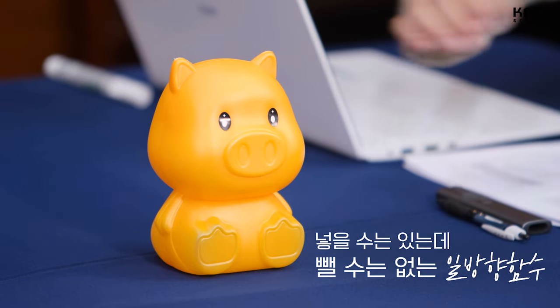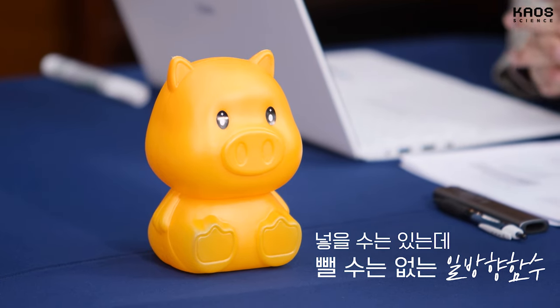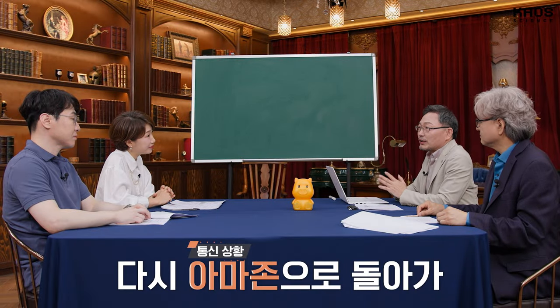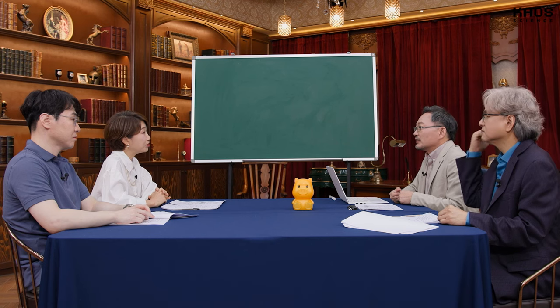수학적으로는 이런 생각을 합니다. 넣을 수는 있는데 뺄 수는 없다. 일방향 함수. 우리가 일방향 금고라고 부르죠. 넣을 수는 있는데 뺄 때는 비밀키가 필요하다. 그러면 저는 아마존에서 물건을 구매하려고 할 거예요. 일방향 금고를 제작합니다. 비밀키는 저만 갖고 있고요. 이 제작된 금고를 인터넷으로 전송하는 거예요. 그러면 아마존에서는 우리가 쓸 통신 비밀키를 하나 만들어서 이 금고에다 넣어서 저한테 돌려줍니다.